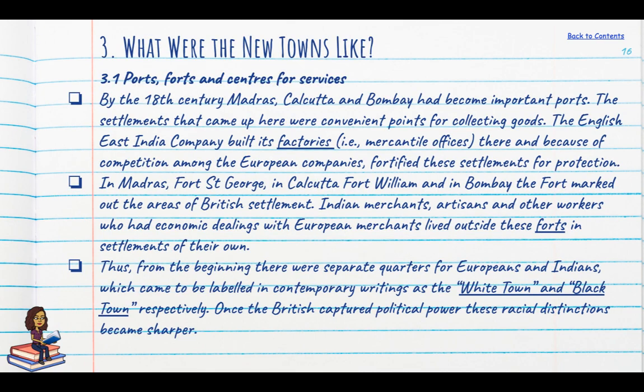So what were these new colonial towns like? Madras, Calcutta and Bombay became pre-eminent hubs of collection and distribution of goods. The English East India Company built factories — which were not manufacturing units but mercantile offices or warehouses — and began to fortify these settlements because of competition and conflict among different European trading companies.